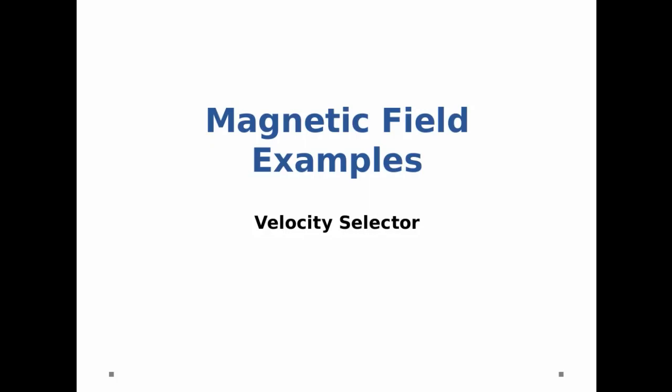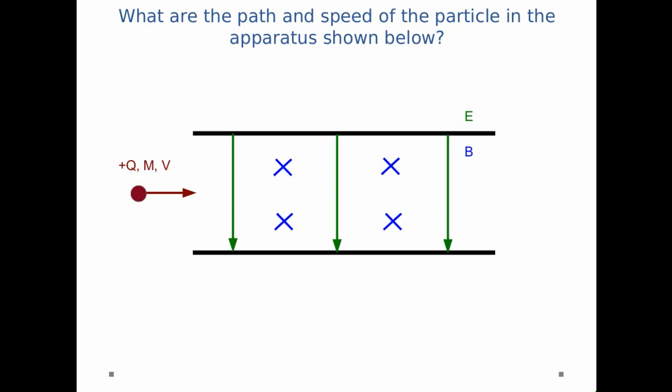In this example we're going to look at a velocity selector. So first off, what is a velocity selector? Well, it consists of a pair of fields, an electric field and a magnetic field, that are crossed in space.